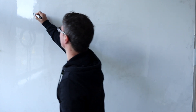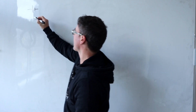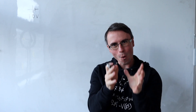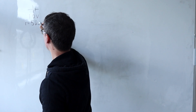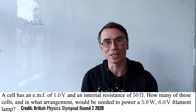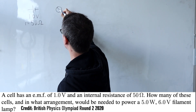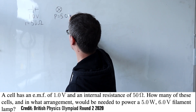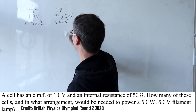Imagine that I have an electrical cell with an EMF of exactly 1 volt, but it also has an internal resistance equal to 50 ohms. How many of those cells and in what arrangement would I need them to power a filament lamp rated at 5.0 watts at a voltage of 6 volts?